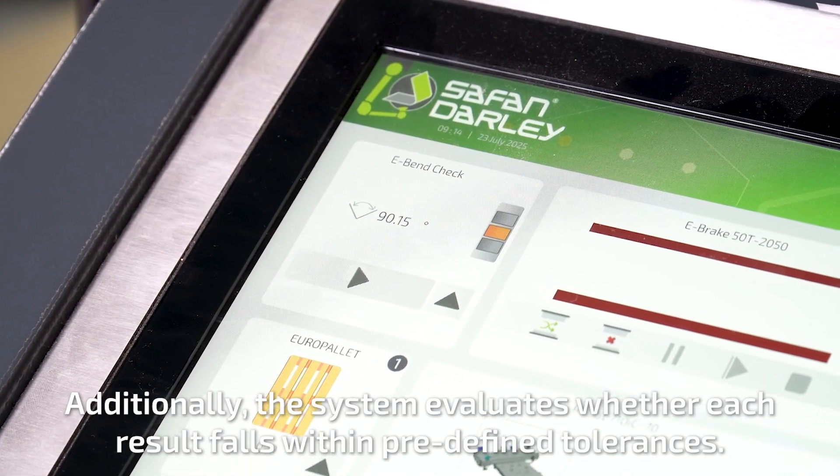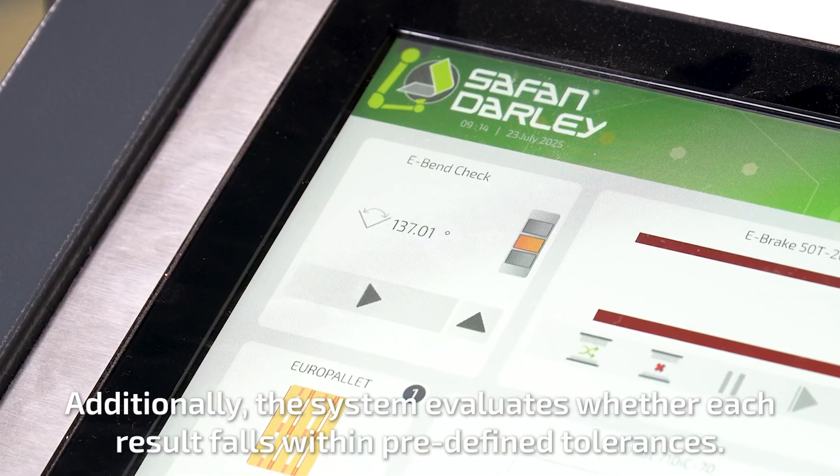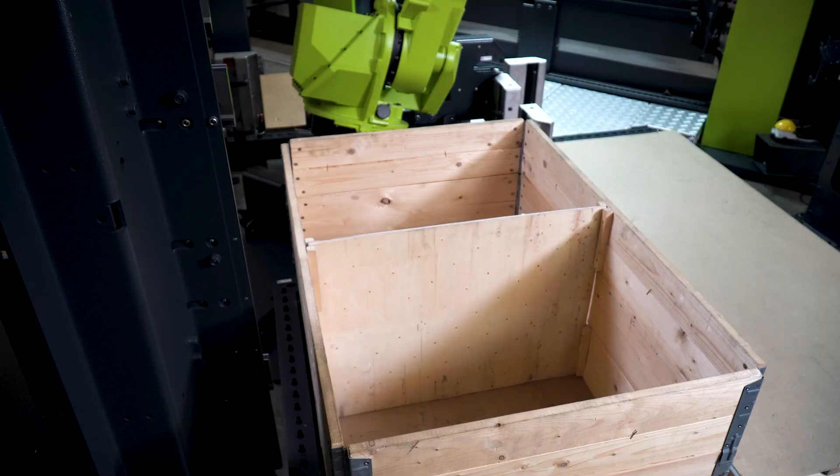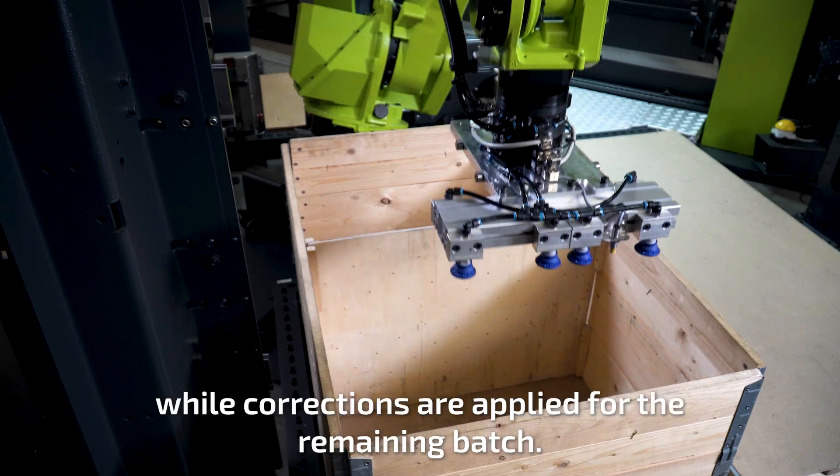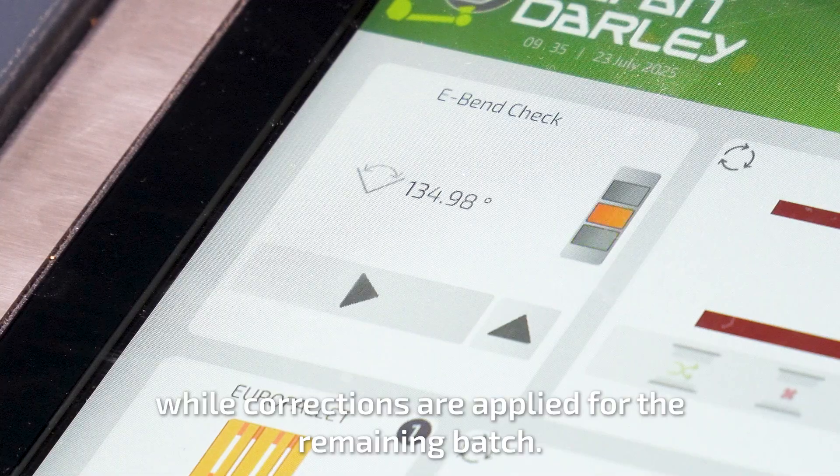Additionally, the system evaluates whether each result falls within predefined tolerances. If a deviation is too large, the product is placed on a separate stack, while corrections are applied for the remaining batch.